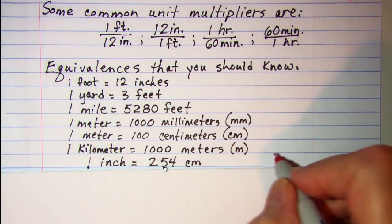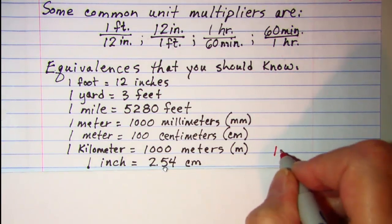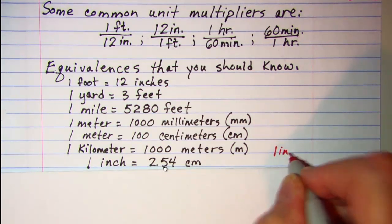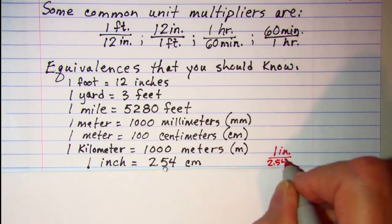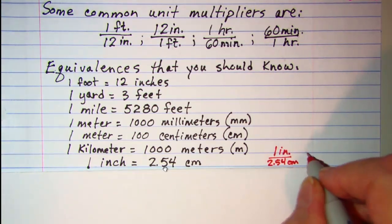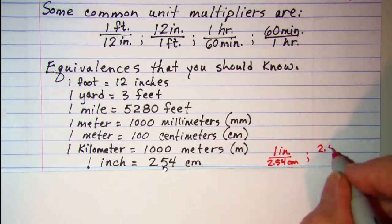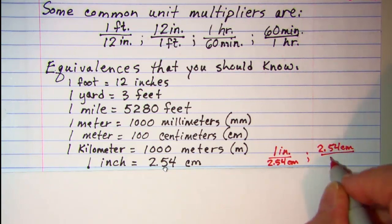We can use that as a unit multiplier. So one inch equals 2.54 centimeters, or 2.54 centimeters over one inch.